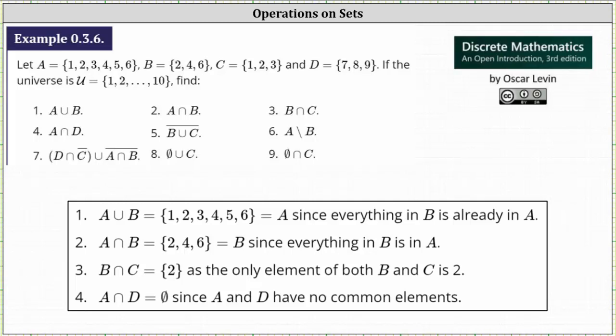We are given sets A, B, C, and D. If the universal set is the set containing the elements 1, 2, 3, all the way through 10, then we're asked to find the following sets.